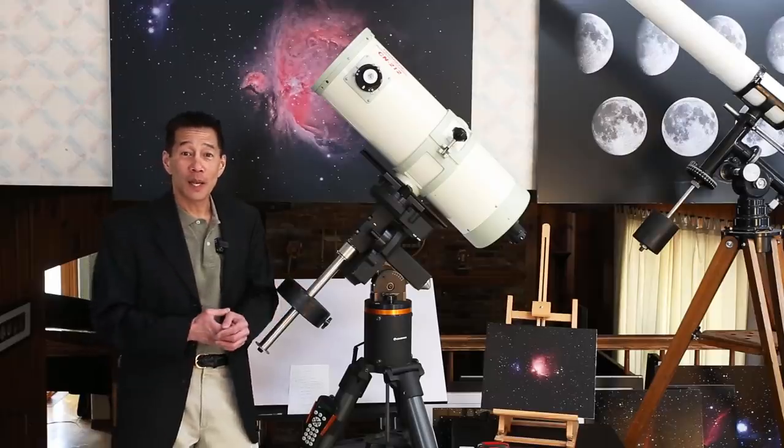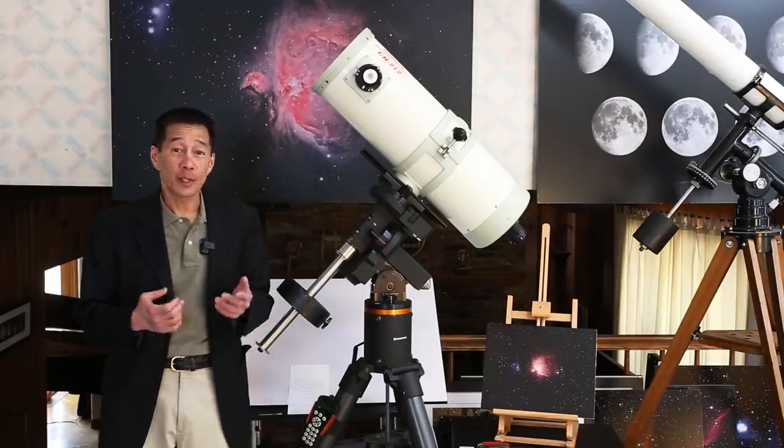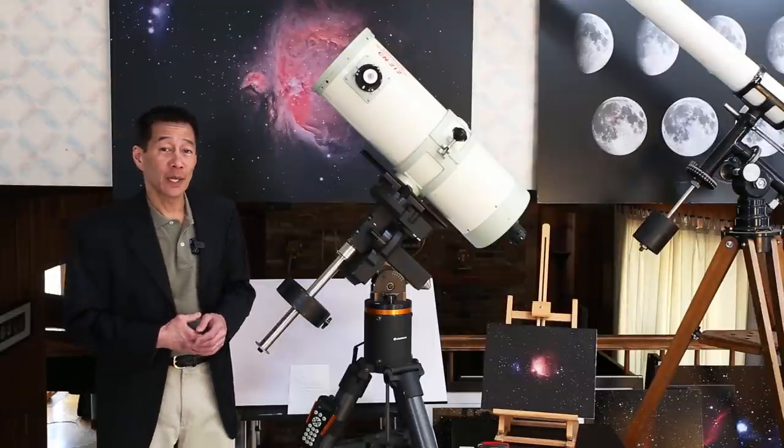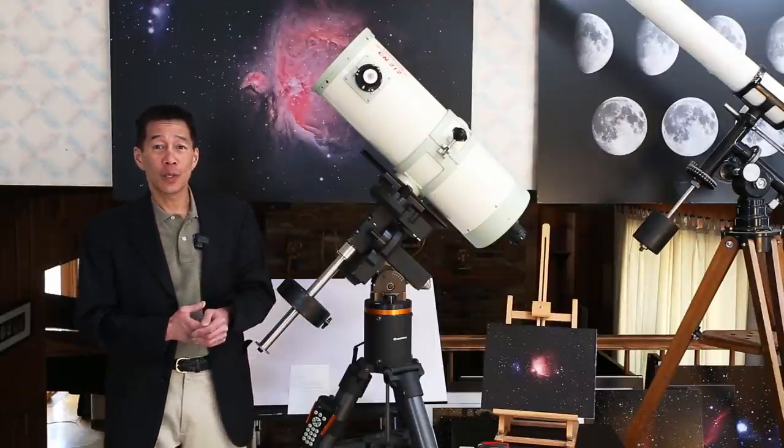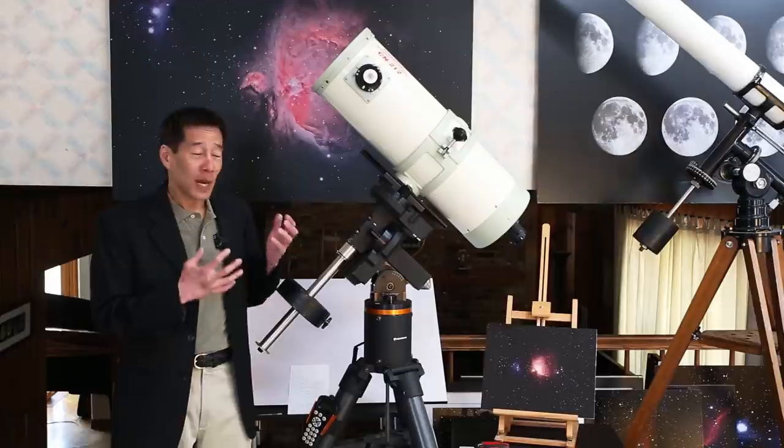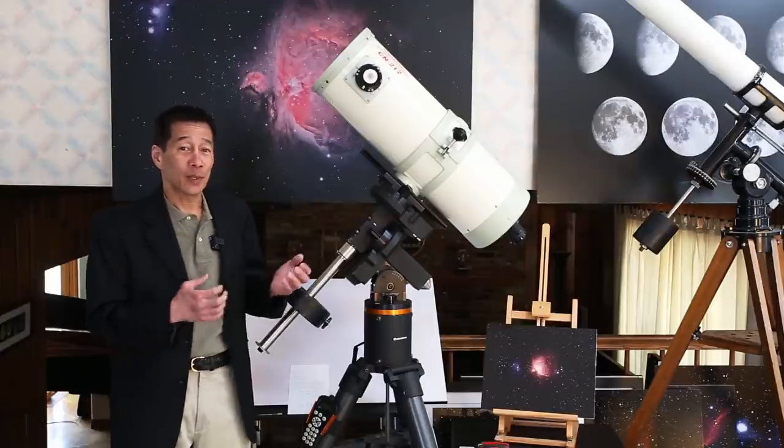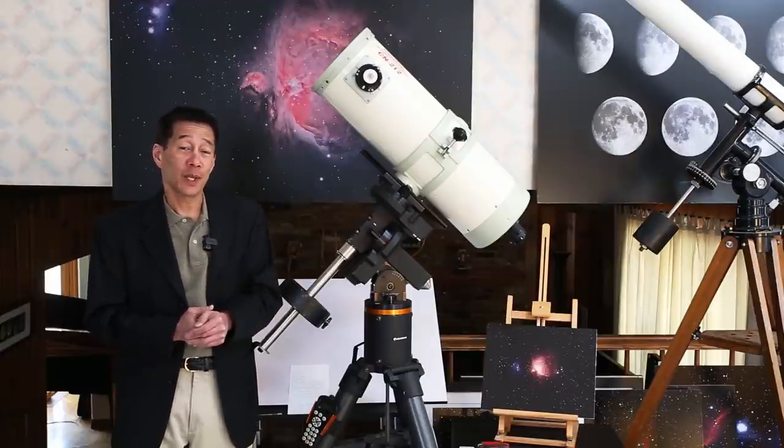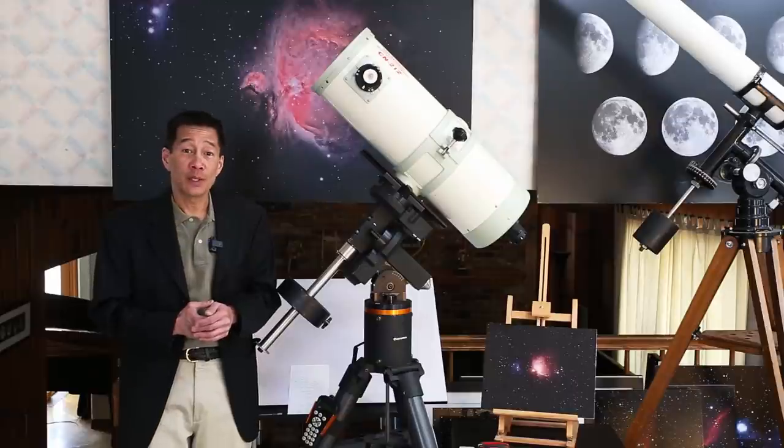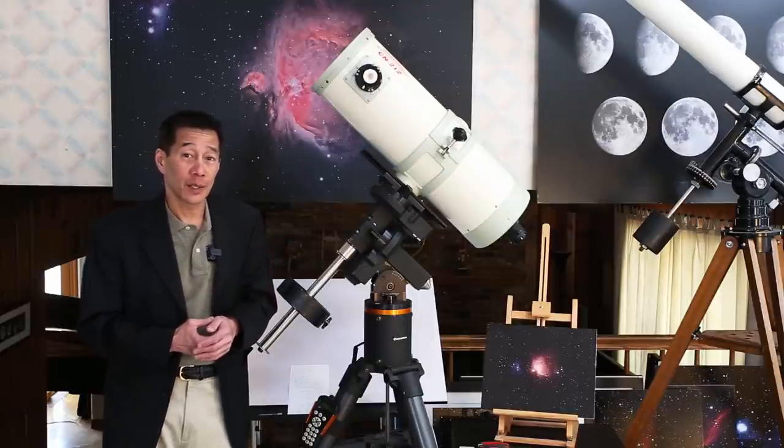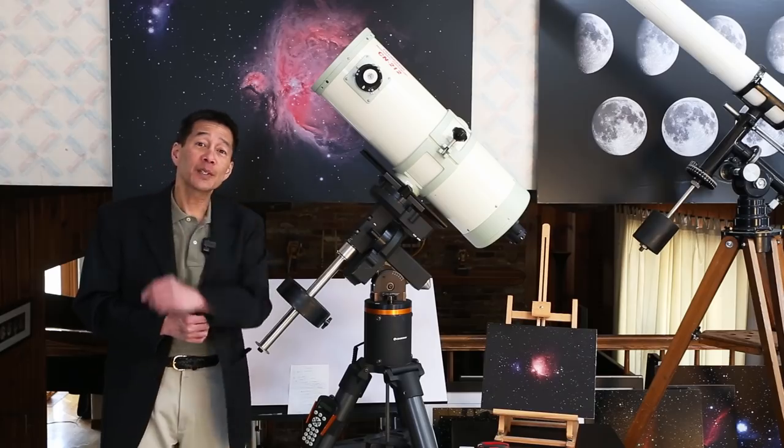So, there you have it. An overview of the Takahashi CN212 convertible cassegrain Newtonian. This one's got to go back to its owner. Yeah, I'm not looking forward to that, but he's probably got some more research he wants to do with it. If you're fortunate enough to own one of these, let us know what you've done with it. I'm sure we'd all like to hear. Thanks for watching, and I'll see you soon.